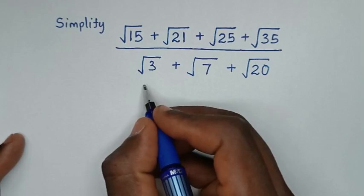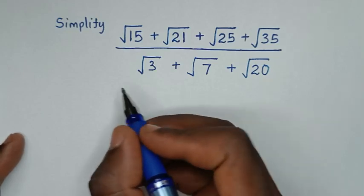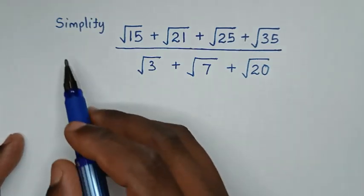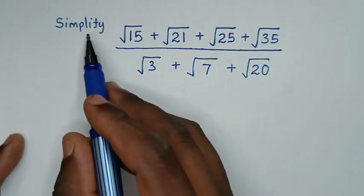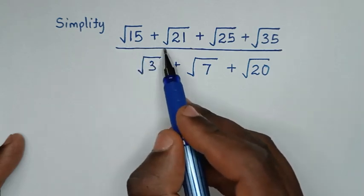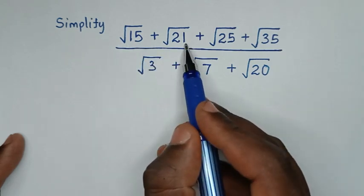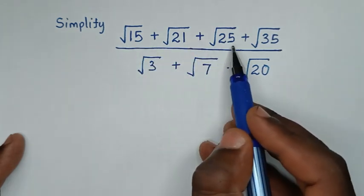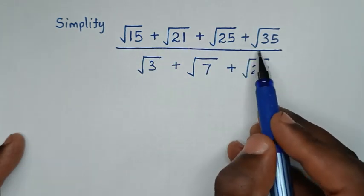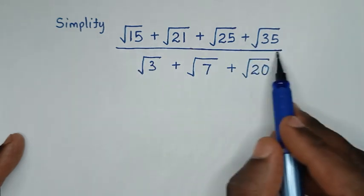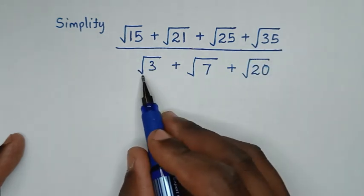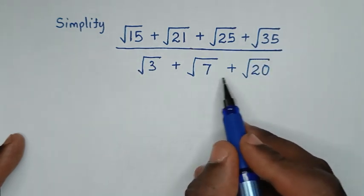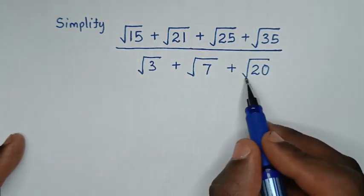Hello, you are welcome to solve this math problem: simplify (√15 + √21 + √25 + √35) over (√3 + √7 + √20).